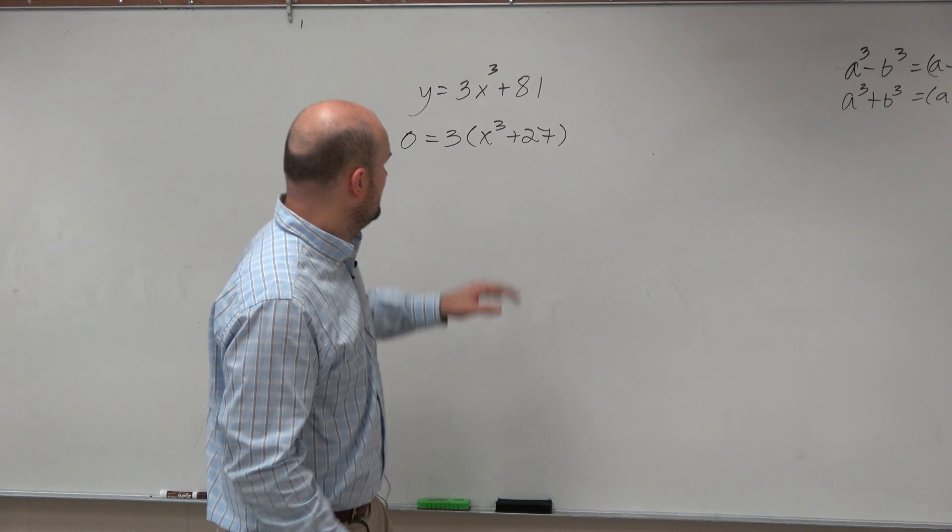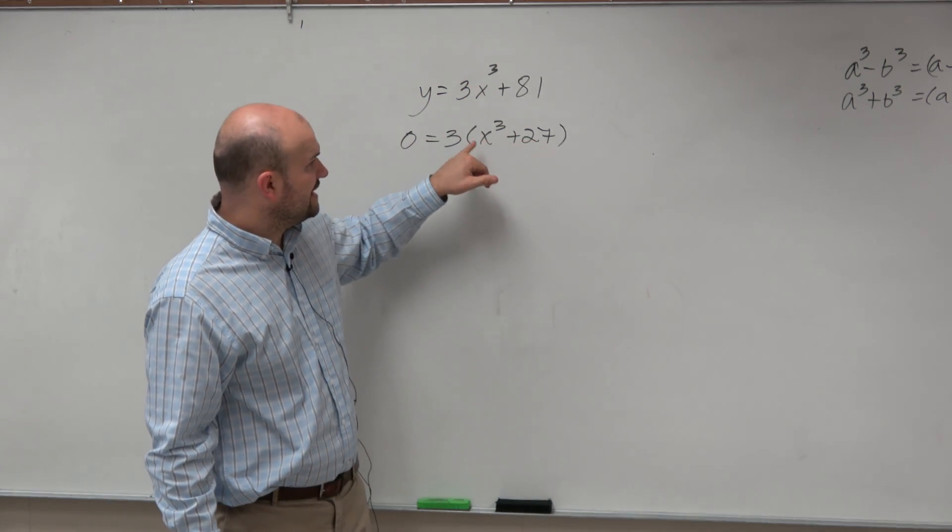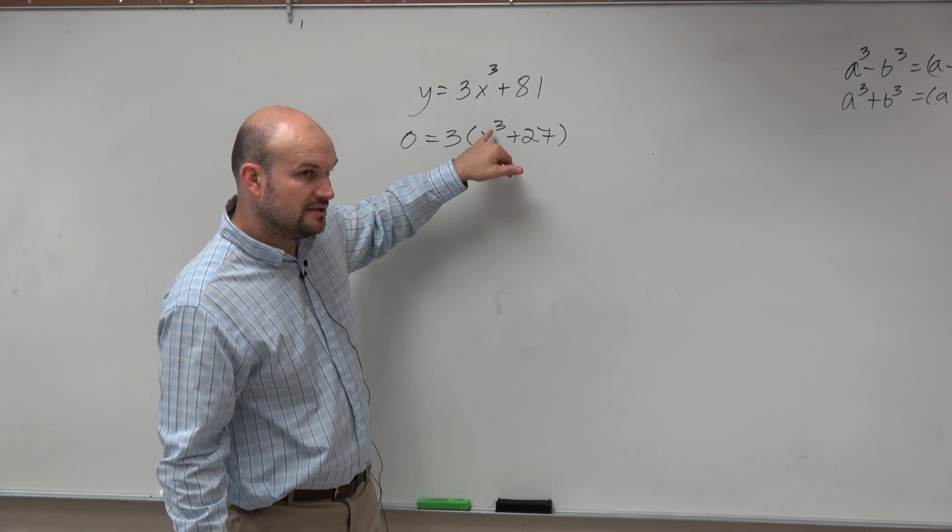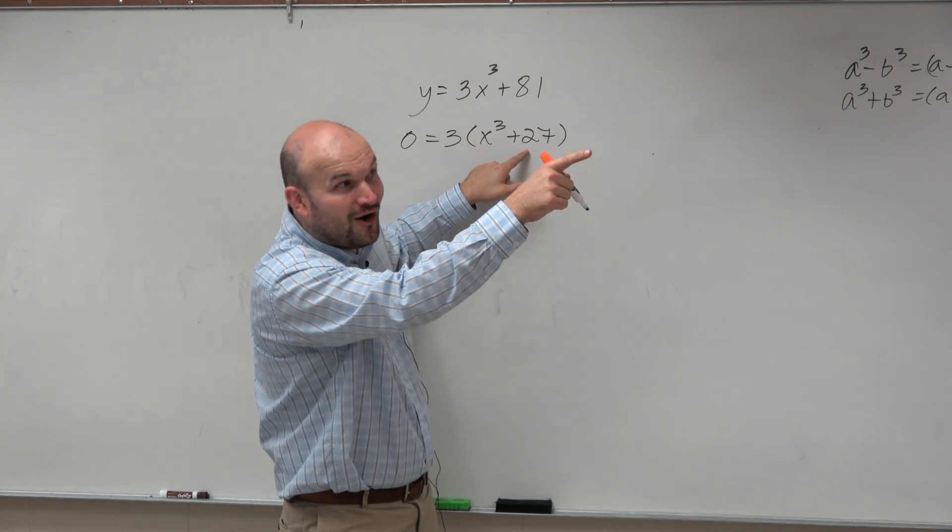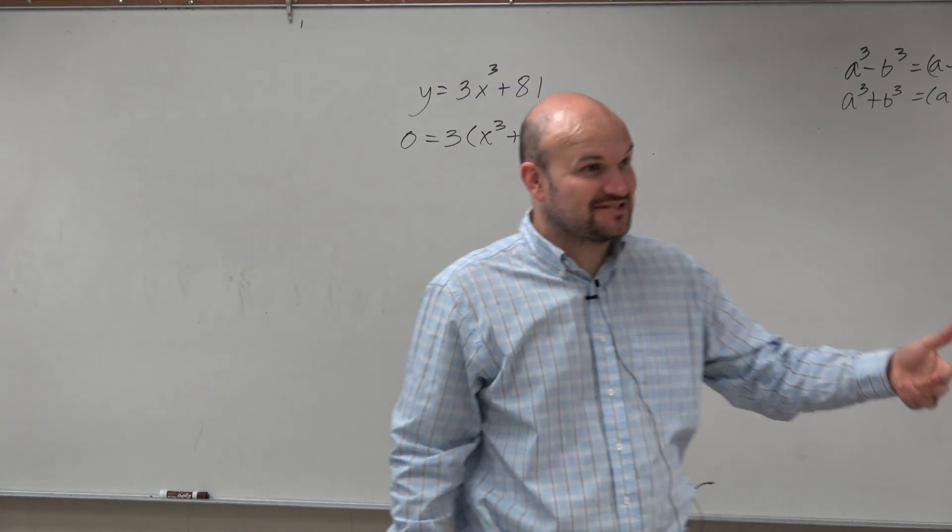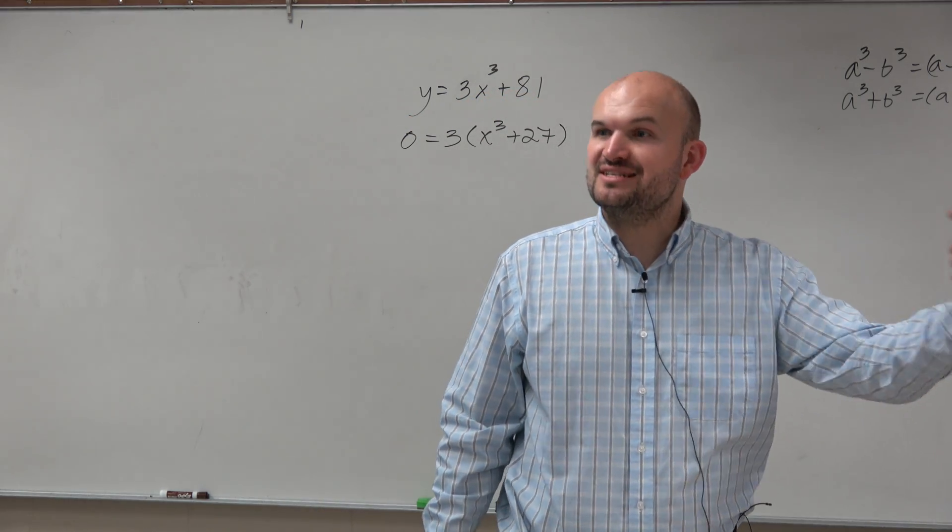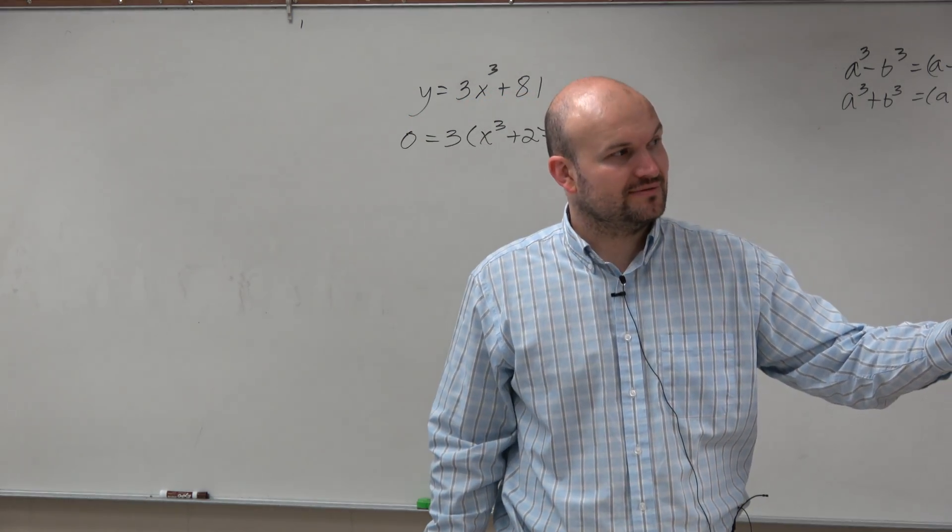Okay, well, let's think about this. Now, inside these parentheses, x cubed is a cubed number. And 27, actually fell off the wall, it's between 8 and 64. But 27 is actually a cubed number as well. 3 times 3 is 9, times 3 is 27.